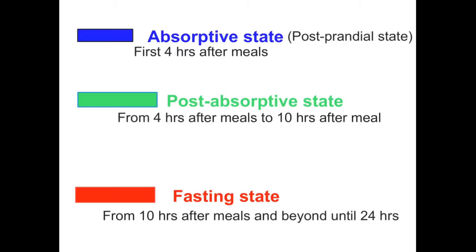Before I explain why breakfast is called breakfast, I need to explain some terminologies. The first is absorptive state, color-coded in deep blue. The absorptive state is also called the post-prandial state — it is the first four hours after a meal. The green color-coded term is post-absorptive state, which starts four hours after meals.